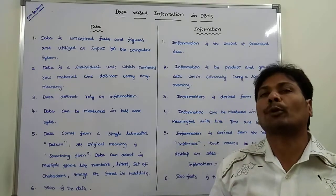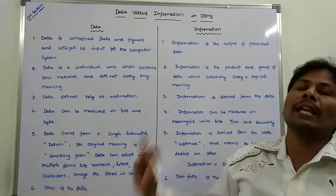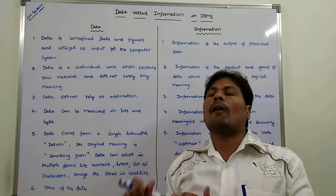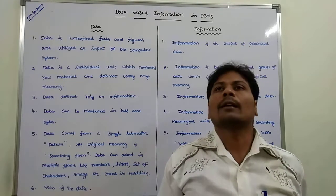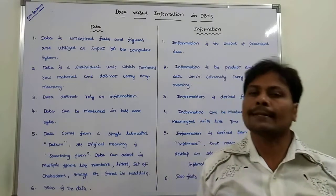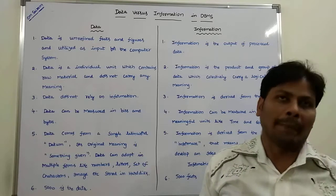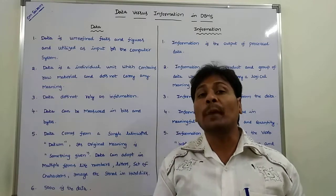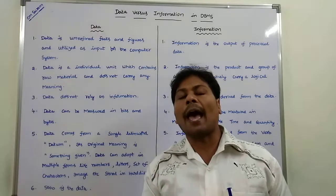The computer system can process the data, and then we can obtain information. Whereas information is the output of processed data. Information can be provided by the computer system whenever data is given as input. We can say that information is equal to data plus meaning — generally data has no meaning, but when we provide meaning to the data, it becomes information.